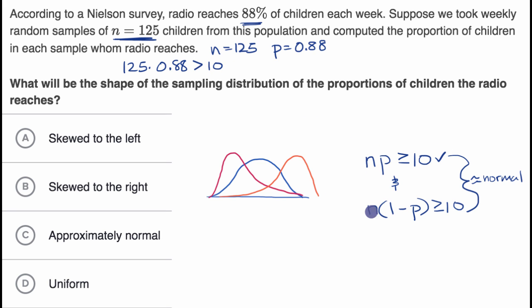But what about the second condition? We could take n, 125, times one minus p. So this is times 0.12. So this is 12% of 125. Well, even 10% of 125 would be 12.5. So 12% is for sure going to be greater than that. So this too is going to be greater than 10. I didn't even have to calculate it. So we meet that second condition.